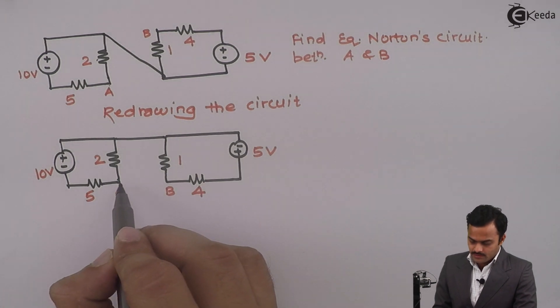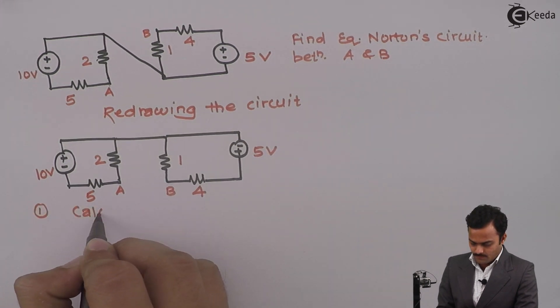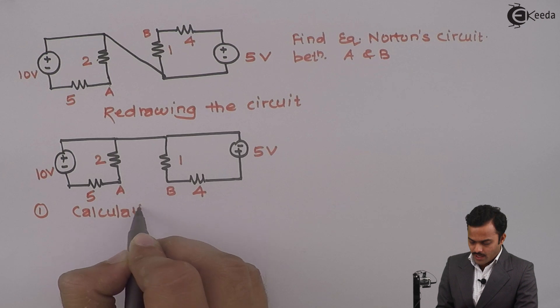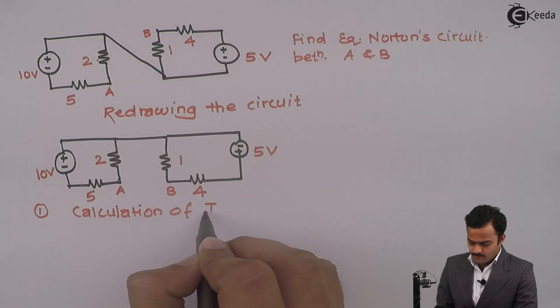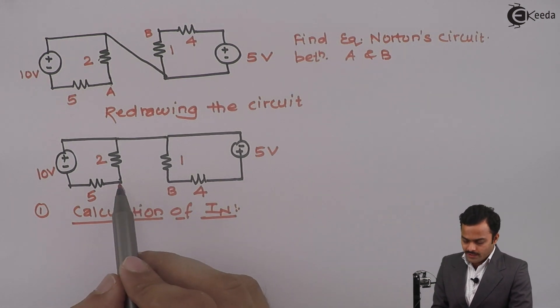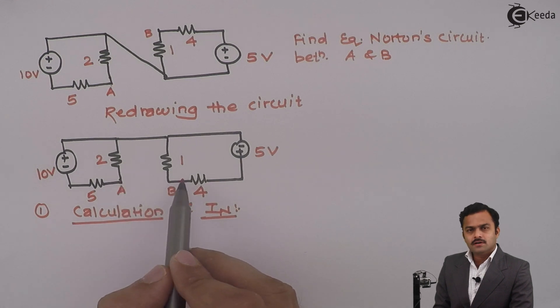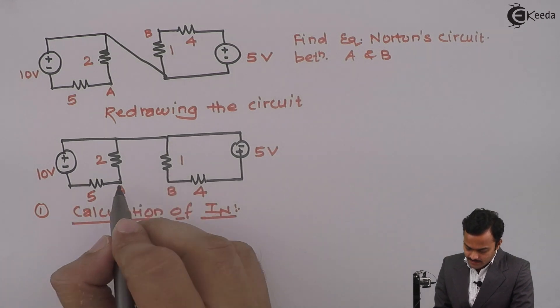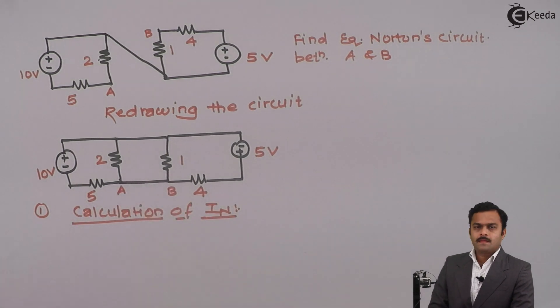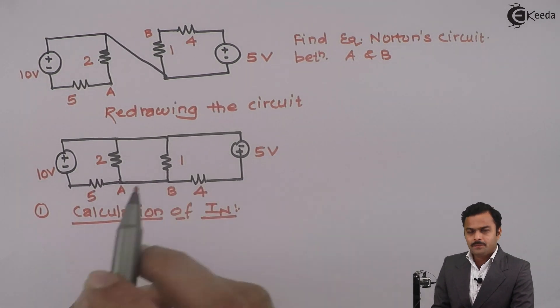Step number one is calculation of IN. What we need to do? We need to connect A and B points by a straight line, a short circuit link. So here only I will replace it with a short circuit link like this, and I need to find the current flowing through this.